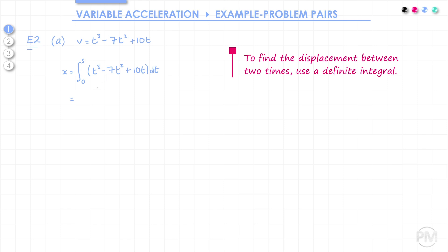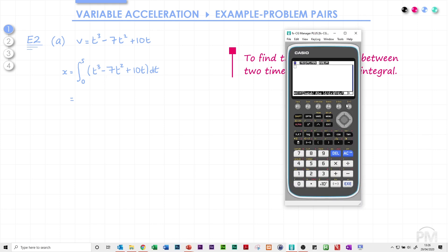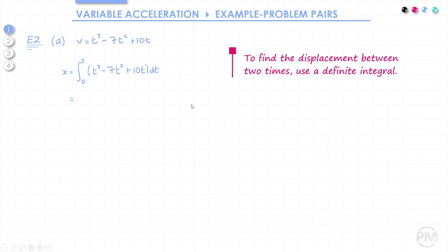As it's a change in displacement, we're going to integrate between t equals 0 and t equals 5. So we can just pop this into our calculator. That gives us minus 125 over 12, which is minus 10.4 if we round to three significant figures.